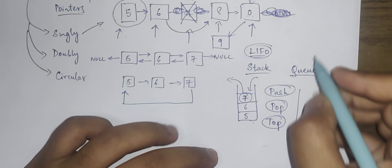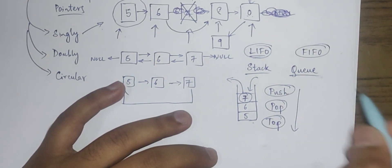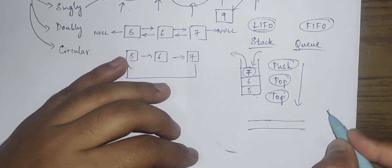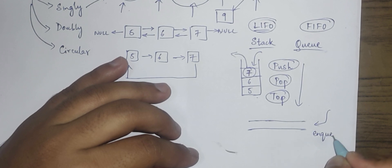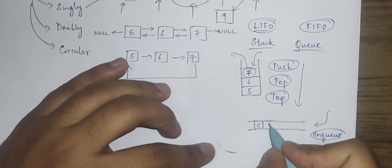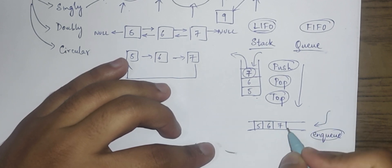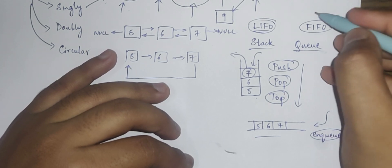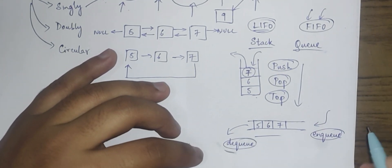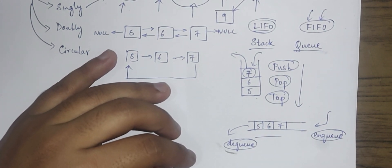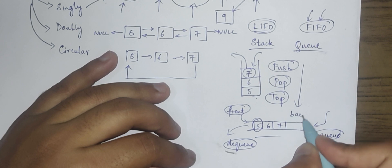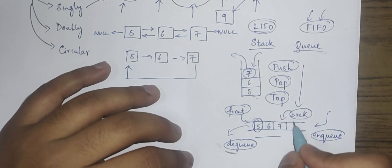A queue can be considered a first-in first-out data structure. To add an element to a queue you enqueue it - for example, enqueue 5, then 6, then 7, each standing in the queue. The element which went in first will be the first to come out, which is why it's called first-in first-out. The operation to remove an element is called dequeue. You can also call a front operation to see what is at the front of the queue, and a back operation to see what is at the back end.